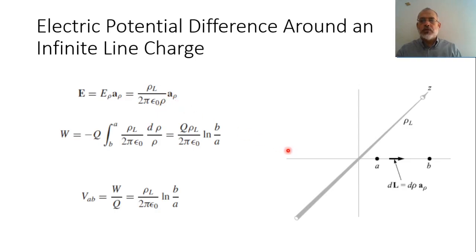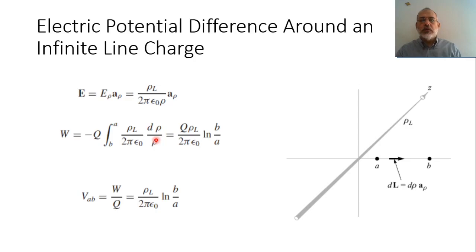The potential difference between point A and point B is defined as the work done: minus Q multiplied by the integration from B to A of the electric field dot dL. We obtain the work as Q times rho_l over (2π ε) times ln(D over A).